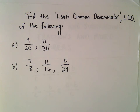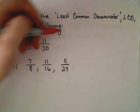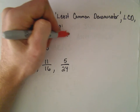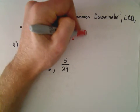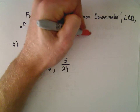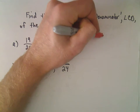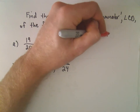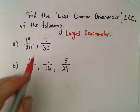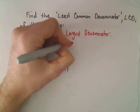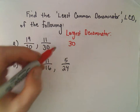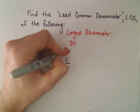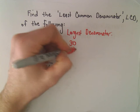The way I typically find least common denominators is I look at the largest denominator. So I look at the largest denominator — in this case the largest denominator is 30 — and then what I start doing is I look at multiples of that number.